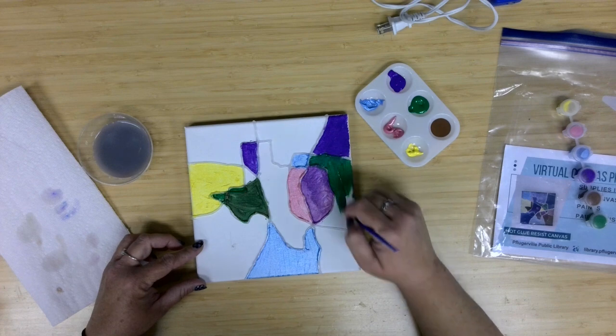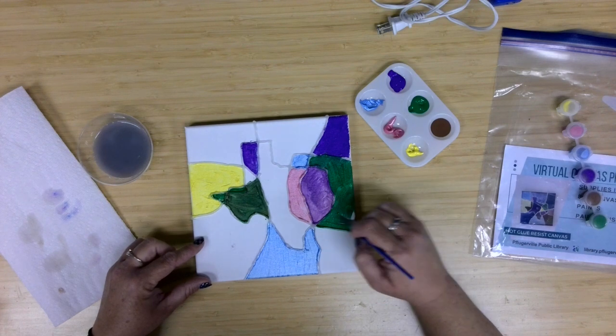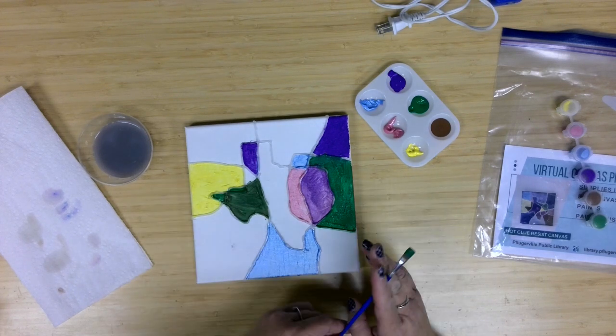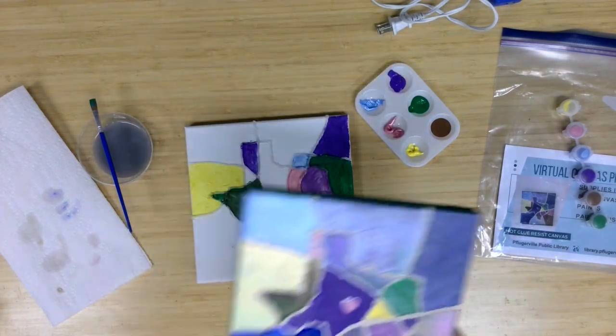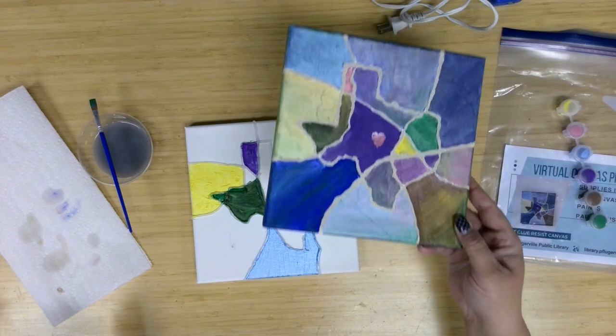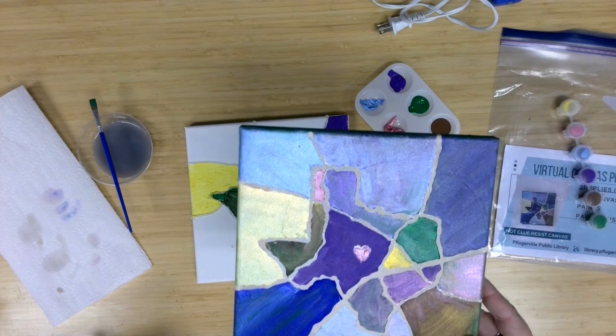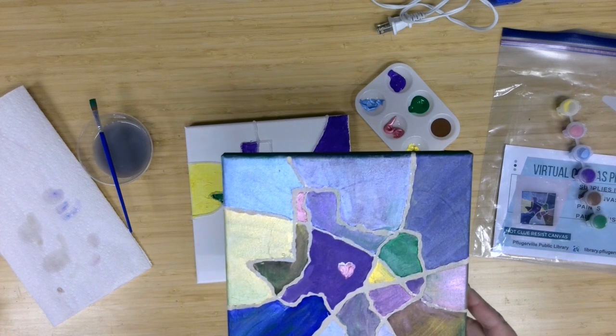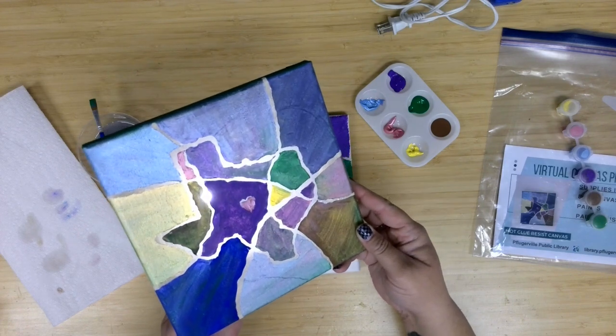For this, with the canvas, because these canvases are treated, that gives them kind of their white color. When we pull off the hot glue eventually, we're actually going to get a look where you'll be able to see through. Let me go ahead and show you my example if you couldn't really tell in the picture. So let's get a light source here. It's a little hard to see within the camera. Get me a flashlight. Here we are.